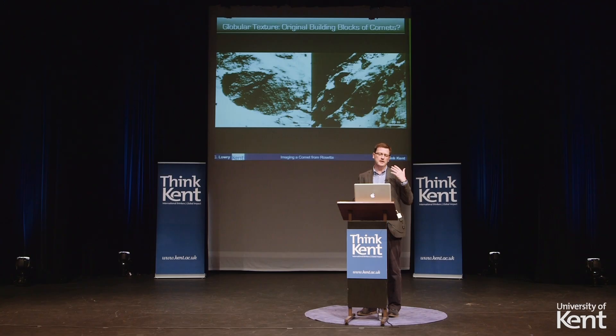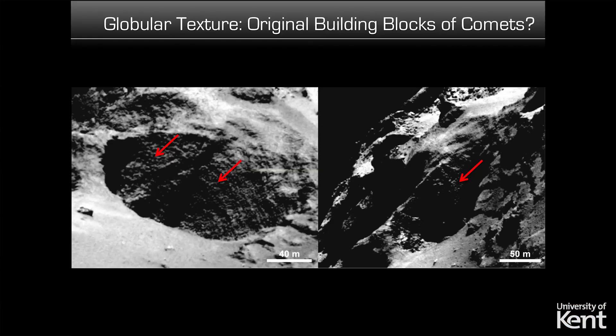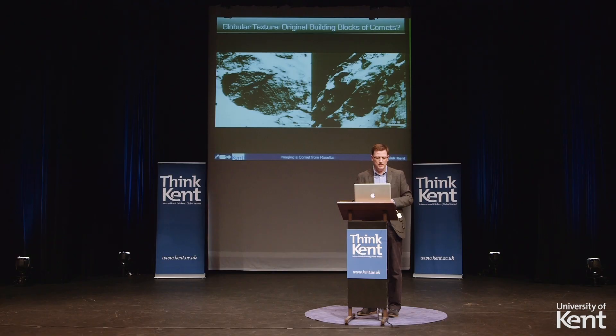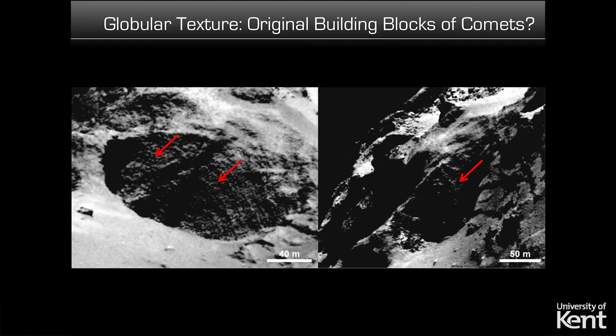One of the more important scientific findings of the mission relates to the detection of globules. Looking at a detailed picture of one of the deep pits on the surface, we're looking at the far wall of that pit, and you can make out spherical globules about three metres wide on that wall. We think those are the original building blocks of comets. While we expected to learn quite a lot about how comets formed from these images, we didn't expect to see such direct evidence of the original building blocks — and that's very exciting.